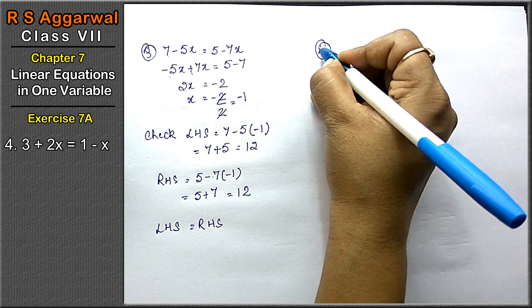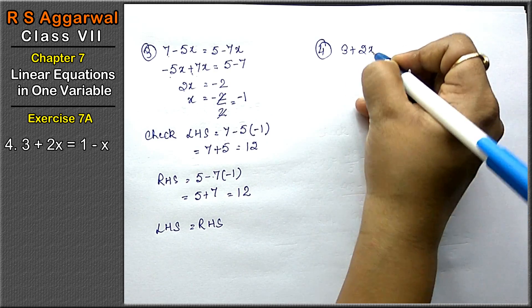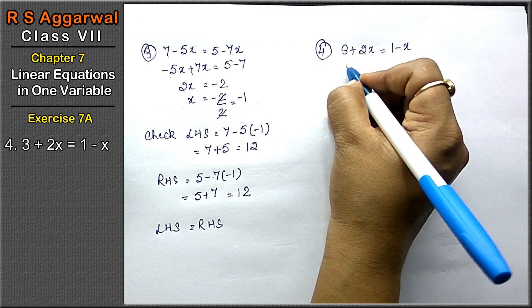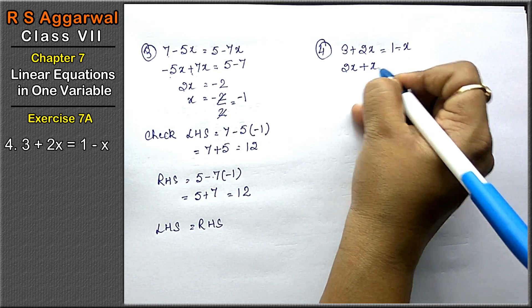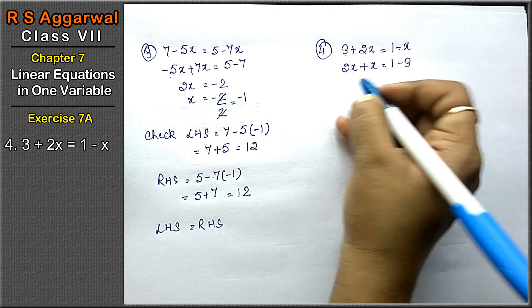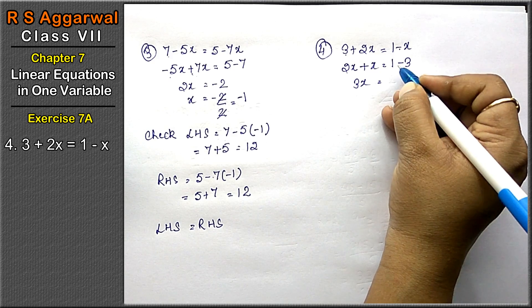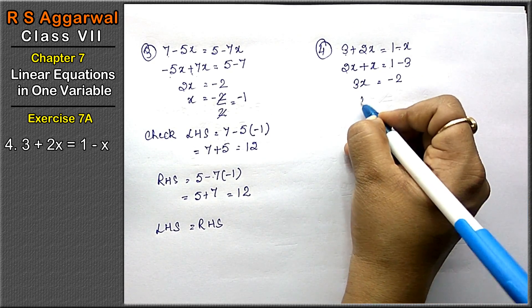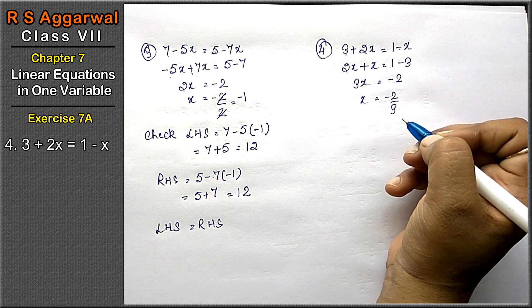Let's do the fourth question. Fourth question is 3 plus 2x equals to 1 minus x. Move x terms to one side and constants to the other. 2x plus x equals 1 minus 3. This gives 3x equals minus 2. x equals to minus 2 upon 3 is the answer.